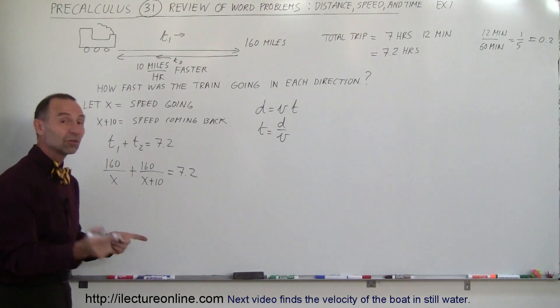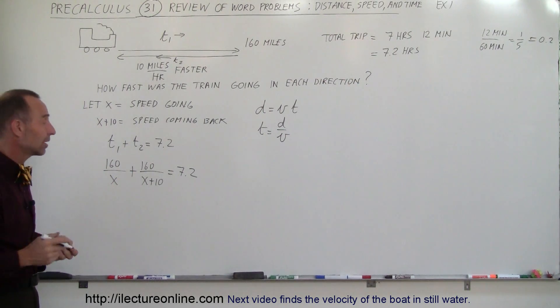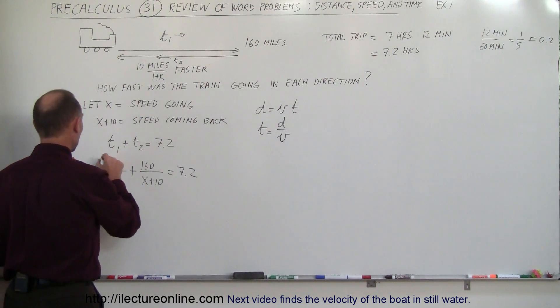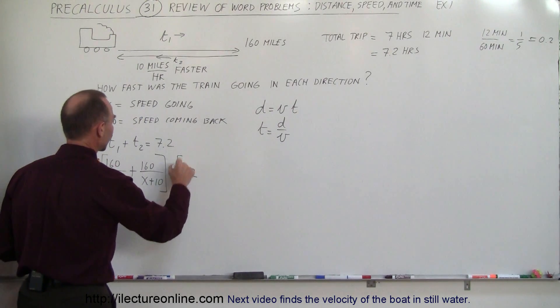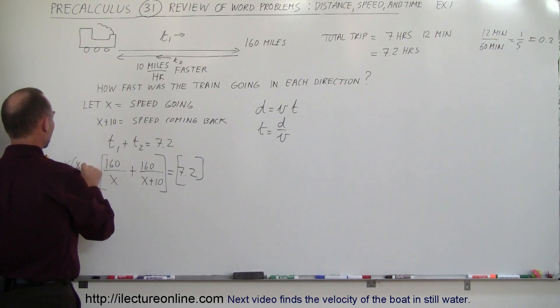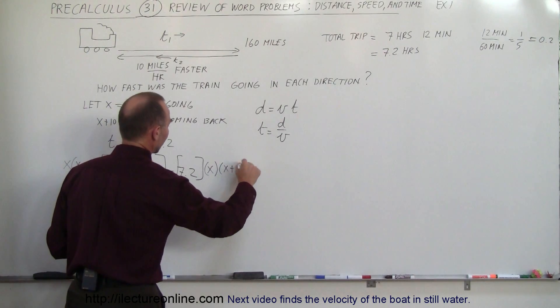And if we solve that equation, we can solve for x, which is the speed of the train going, and x plus 10 is the speed coming back. How do we solve that? We've seen some examples like that before. We multiply both sides of the equation by the lowest common denominator, which is x times x plus 10.